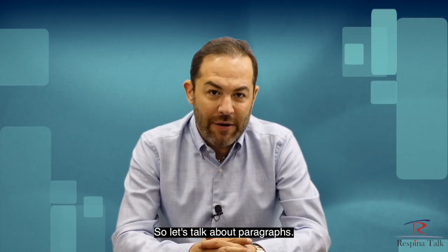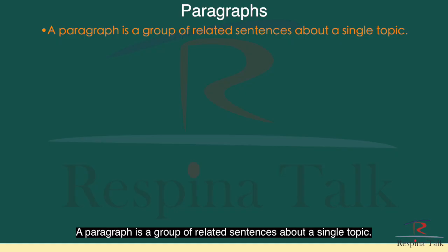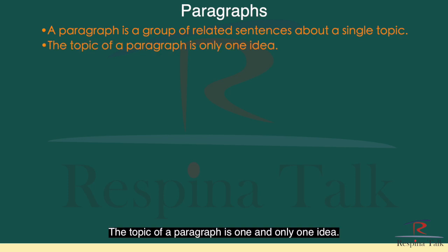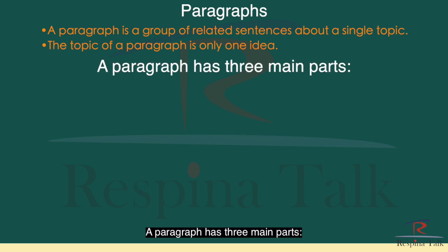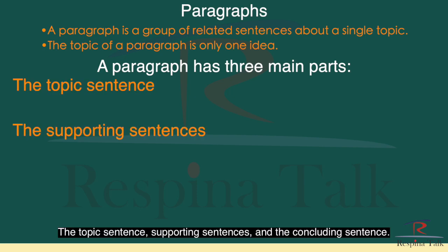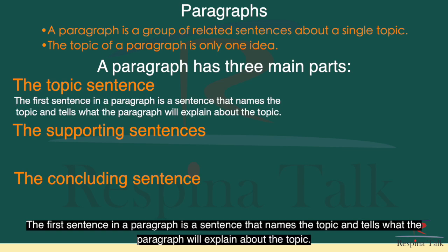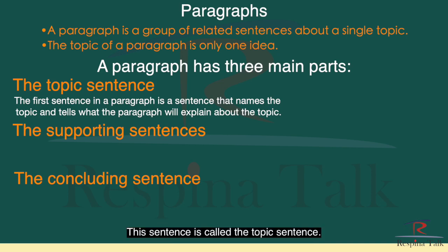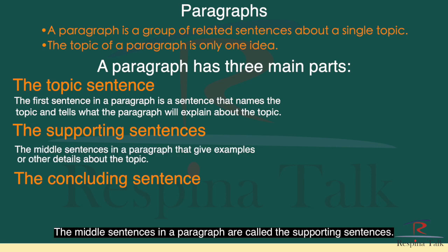So let's talk about paragraphs. A paragraph is a group of related sentences about a single topic. The topic of a paragraph is one and only one idea. A paragraph has three main parts: the topic sentence, supporting sentences, and the concluding sentence. The first sentence in a paragraph names the topic and tells what the paragraph will explain about the topic — this sentence is called the topic sentence.